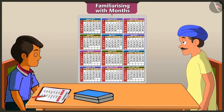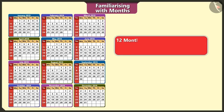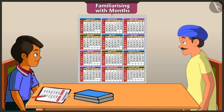Uncle, if we add all the days of the 12 months, then what is the total number of days? If we add all the days of 12 months, it makes a total of 365 days. And if we add all the days of the 12 months in a leap year, then the total number of days is 366.